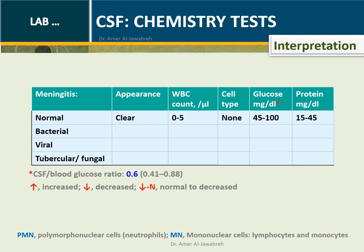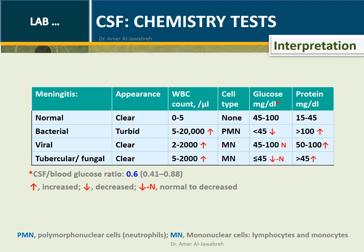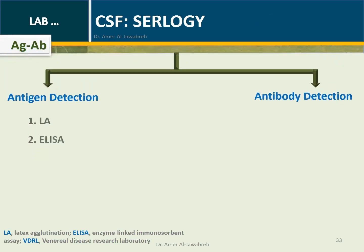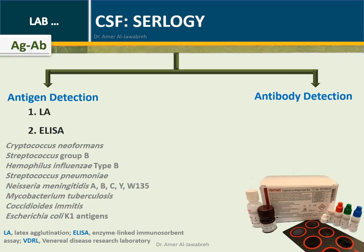CSF Chemistry Test Interpretation compared to normal values: Bacterial meningitis is characterized by turbid appearance, increased white blood cells (predominantly neutrophils), low glucose levels, and high protein levels. Viral meningitis is characterized by normally clear appearance, increased white blood cells (predominantly lymphocytes and monocytes), normal glucose levels, and increased protein levels. Other tests can be requested on special occasions. CSF serology includes antigen detection using latex agglutination (LA) and ELISA, or antibody detection such as VDRL for detecting neurosyphilis.